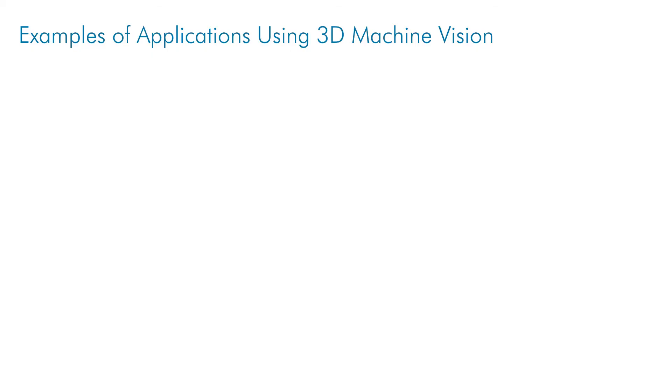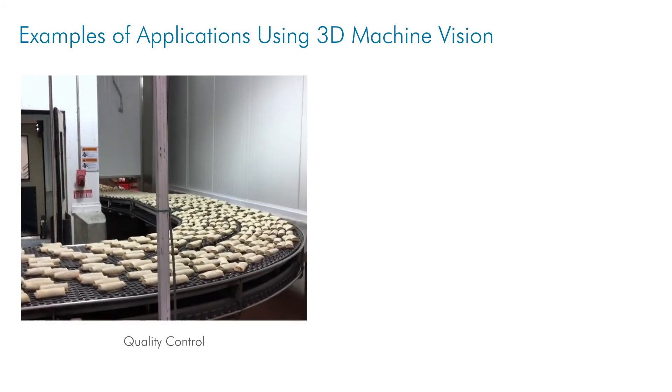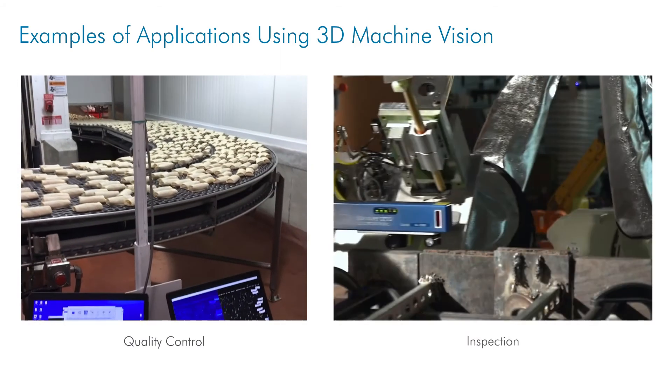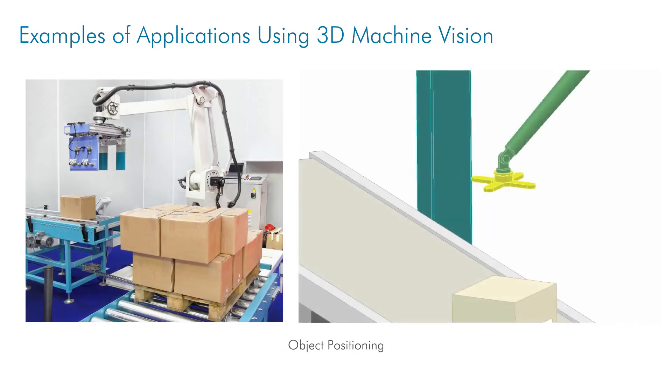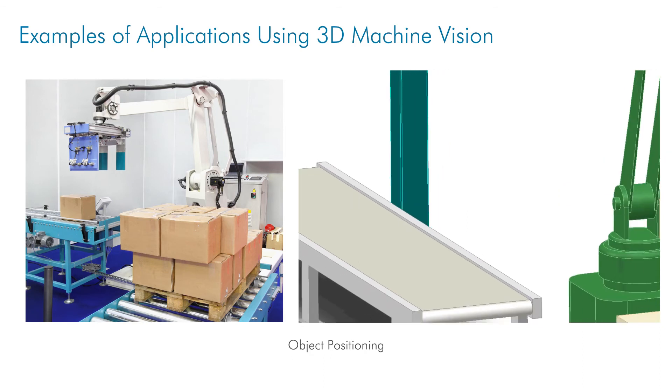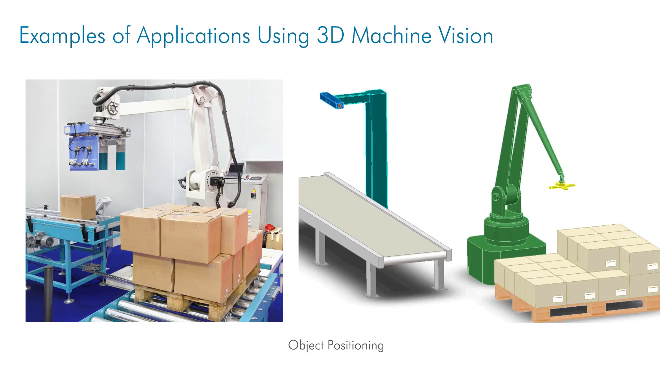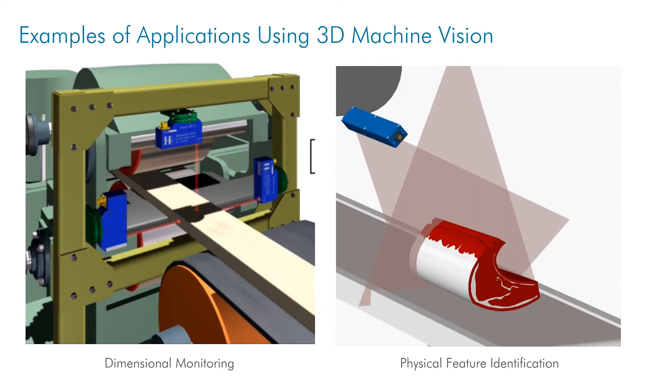3D machine vision has had phenomenal growth over the years and is becoming more and more commonplace in industrial applications. It continues to grow as 3D machine vision devices become more accessible and the ability to process 3D data becomes easier. 3D machine vision devices have proven themselves in applications involving quality control, inspection, machine guidance, object positioning, dimensional monitoring, and physical feature identification.